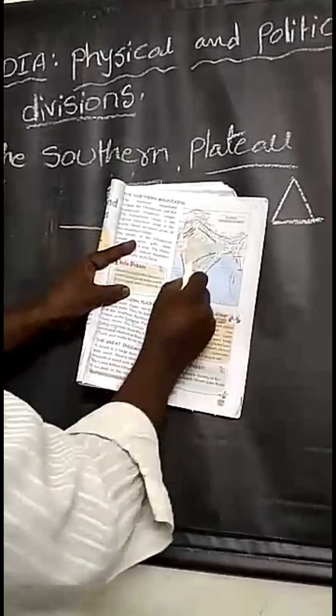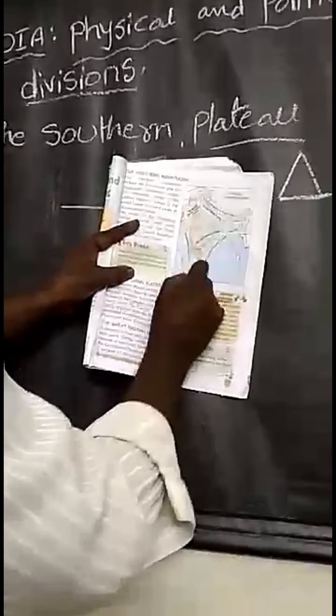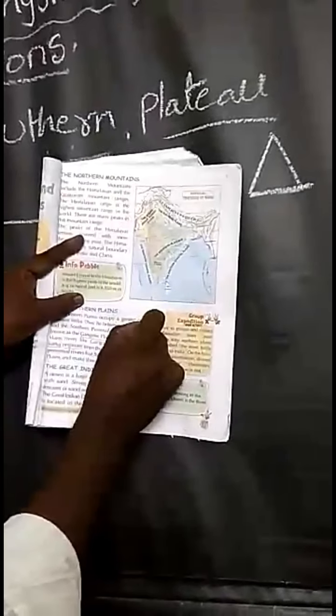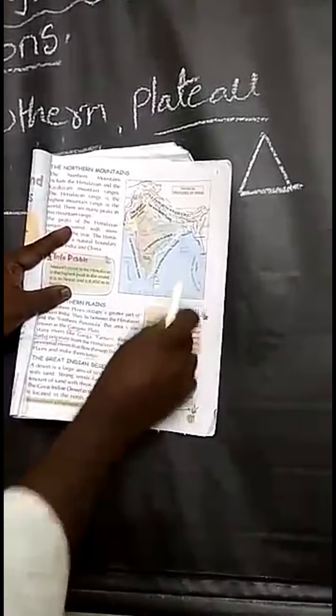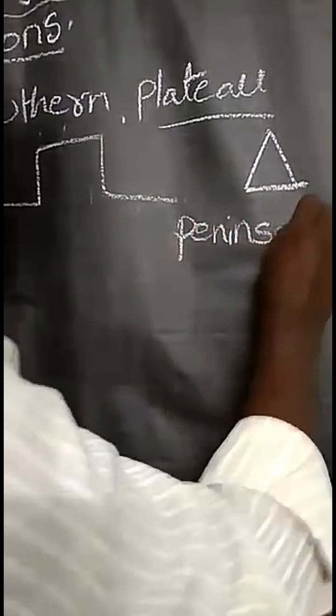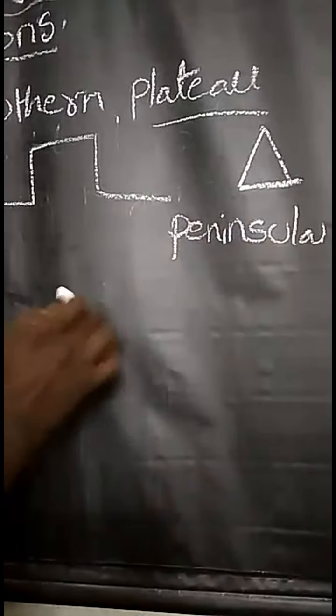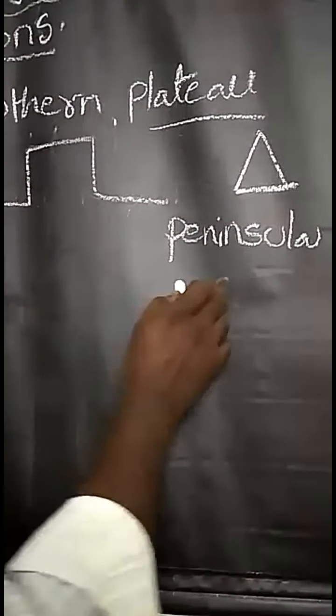It is a triangular shape. It is surrounded by the Arabian Sea in the west, the Bay of Bengal in the east, and the Indian Ocean in the south. Now I will show the map. See here - this is the southern plateau, covering a large part of the Indian Peninsula. Peninsula means three sides water, one side land area.